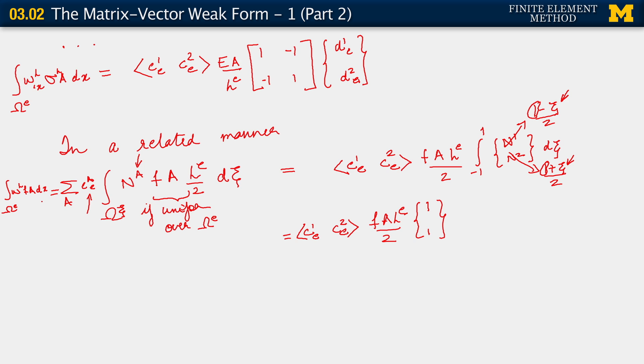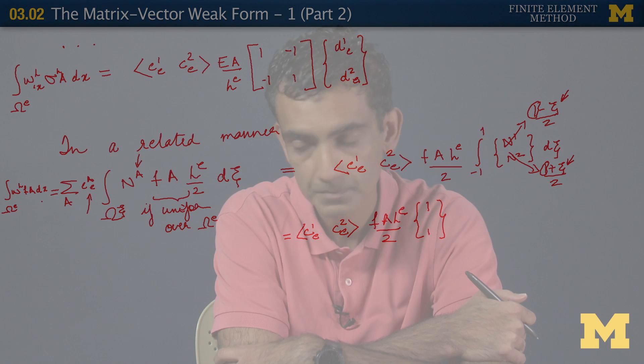We've arrived at this final form for the forcing function term. This is a good place to end this segment. When we come back, we will talk about what these matrix-vector forms give us further.